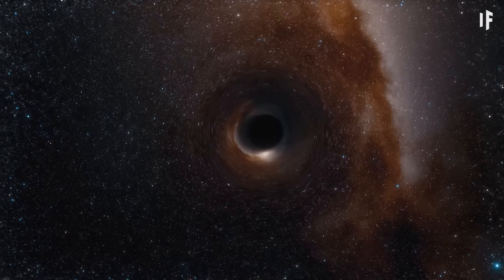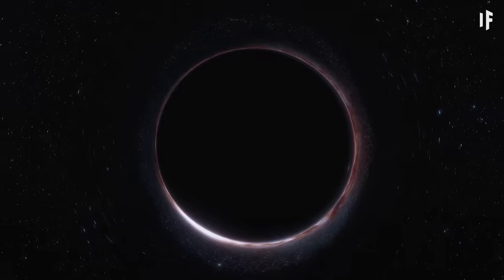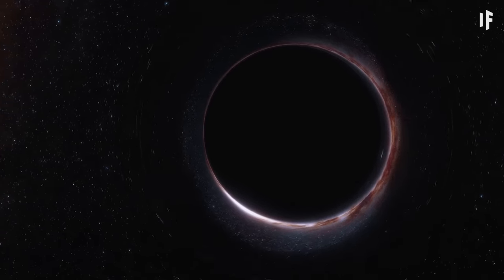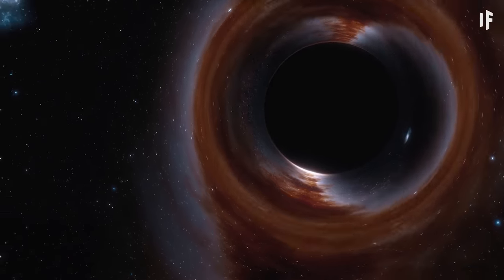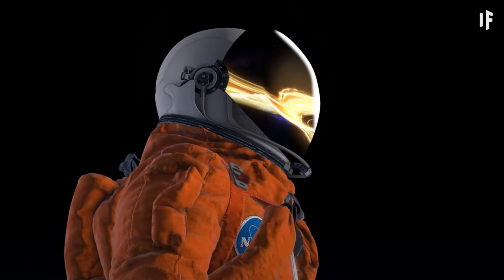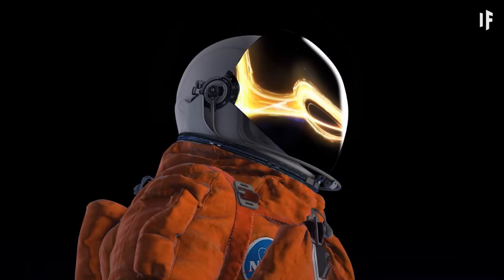Stellar-mass black holes are the most common type. They can have up to 20 solar masses, but could fit in a ball much smaller in diameter than our Sun. OK, now let's go back to you observing this gravitational show firsthand.